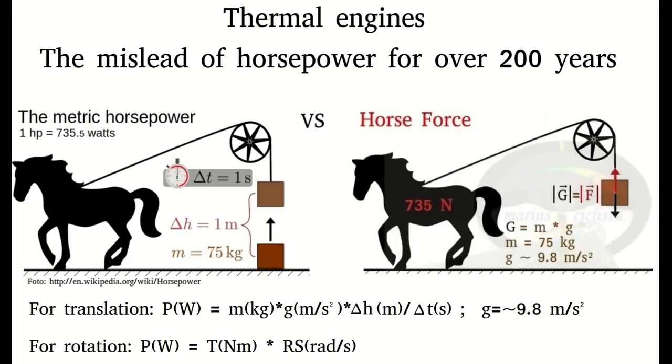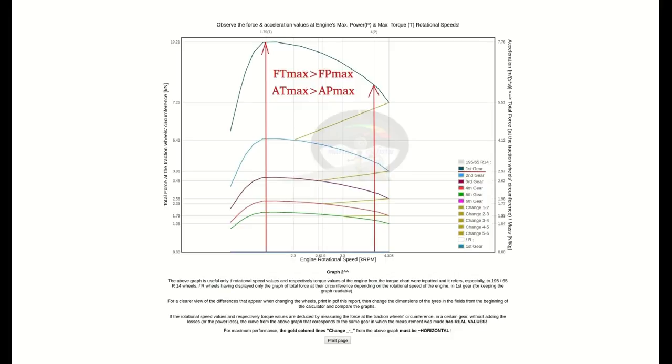Six: The traction force at the maximum torque's RPM is bigger than the force at the maximum power's RPM. Consequently, the same thing can be said about the acceleration.